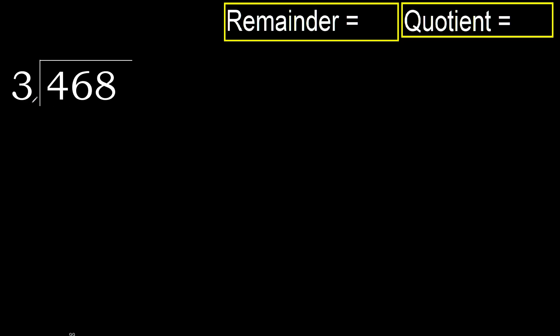468 divided by 3. 4 is not less, therefore with 4: 3 multiplied by which number is nearest to 4 but not greater?